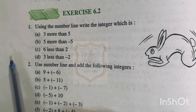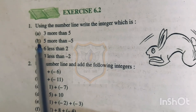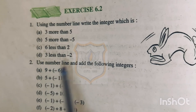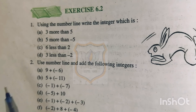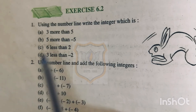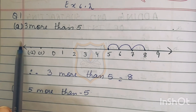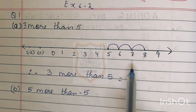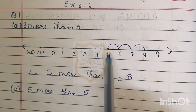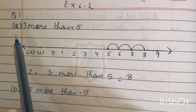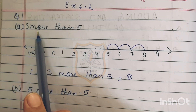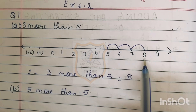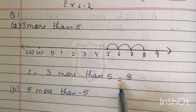Exercise 6.2, question number 1: using the number line, write the integer which is — A: 3 more than 5; B: 5 more than minus 5; C: 6 less than 2; D: 3 less than minus 2. For part A, draw a number line, find 5, then move 3 steps to the right — 1, 2, 3 — and we reach 8. Therefore, 3 more than 5 equals 8.